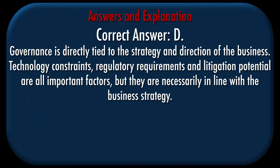Correct answer: D. Explanation: Governance is directly tied to the strategy and direction of the business. Technology constraints, regulatory requirements, and litigation potential are all important factors, but they are necessarily in line with the business strategy.